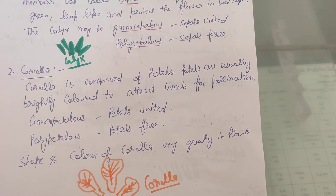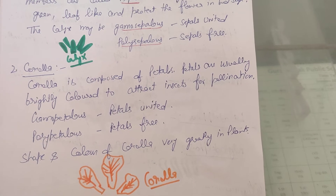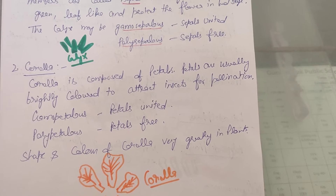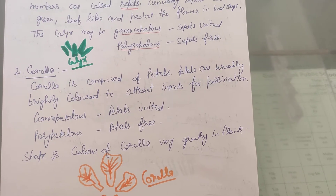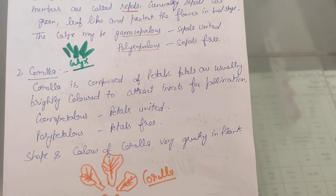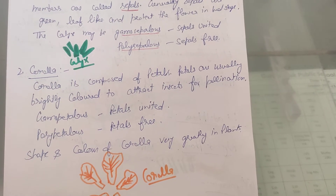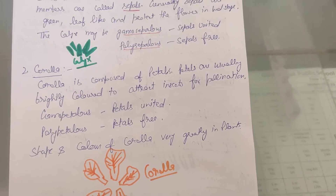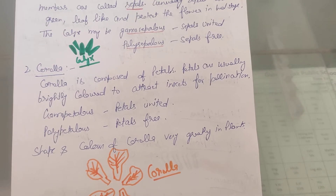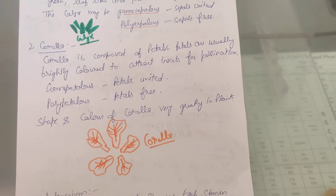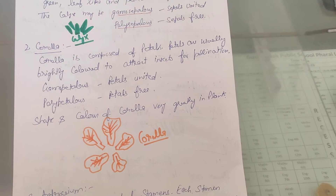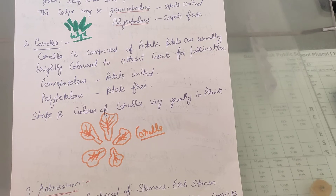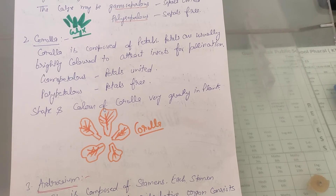The second whorl is corolla. Corolla is composed of petals. Petals are generally brightly colored to attract insects for pollination. There are also two types: gamopetalous, if petals are united, and polypetalous, if petals are free. The shape and color of corolla vary greatly in plants.